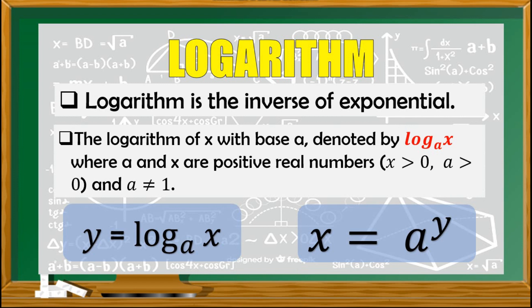Why can the value of a not be equal to one? Recalling exponential: if we have one as the base raised to any real number, that will always give a value of one, so it's no longer exponential. And why can it not be negative? If we have a negative value, say negative four raised to the power of one half, that gives us the square root of negative four, and if we simplify that the answer is 2i, which is no longer a real number — it is imaginary.